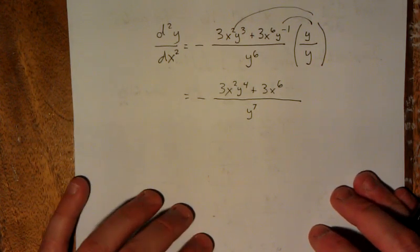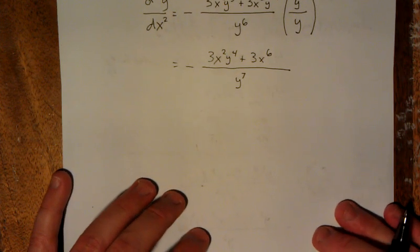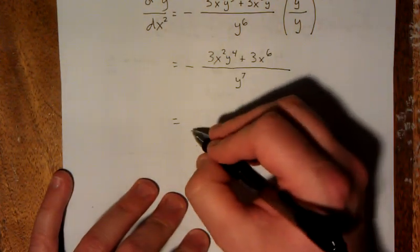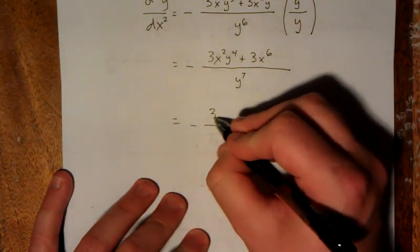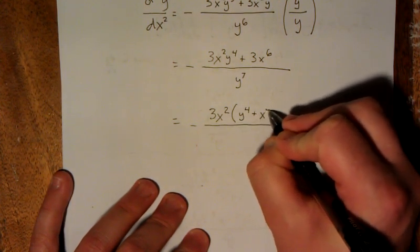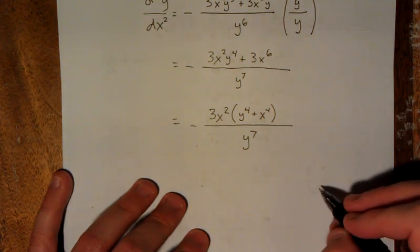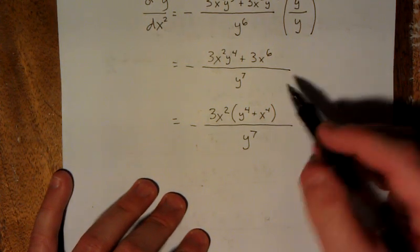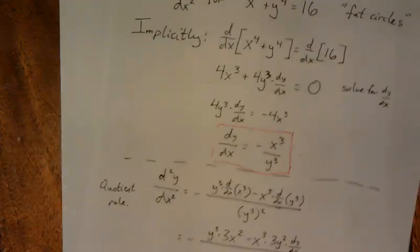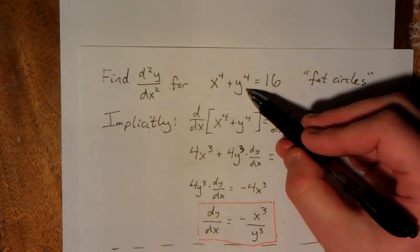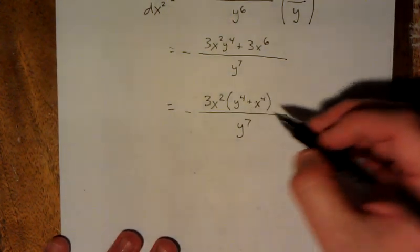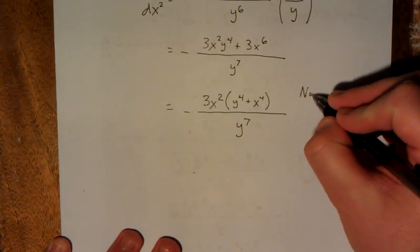Now at this point, it might look like we are done, and as far as the calculus goes, we pretty much are done. However, I'm going to factor out a greatest common factor from the numerator. From the numerator, the two terms have in common a 3x squared, leaving me with y to the fourth plus x to the fourth, all still over y to the seventh. The reason that that's significant is that this y to the fourth plus x to the fourth is a quantity from the other side of the paper. The thing that we started with, our fat circle, was x to the fourth plus y to the fourth equals 16. That's a substitution that we can make here.